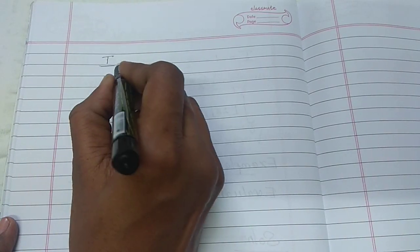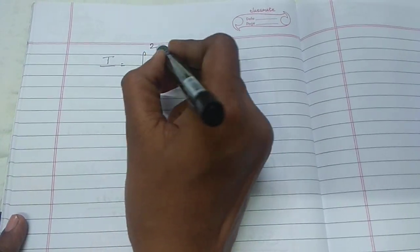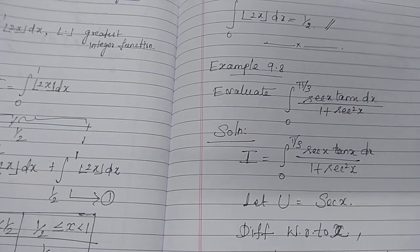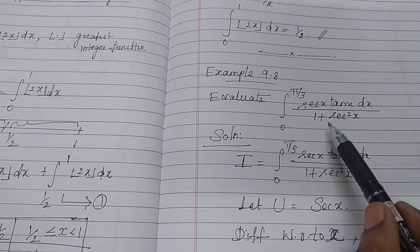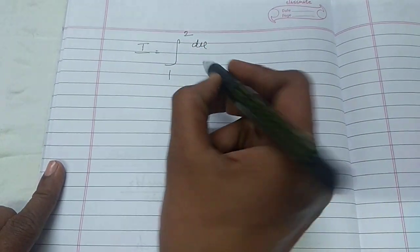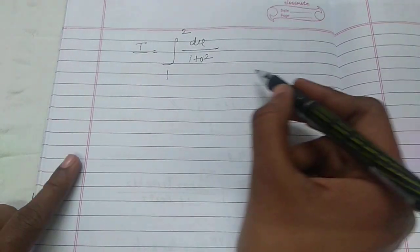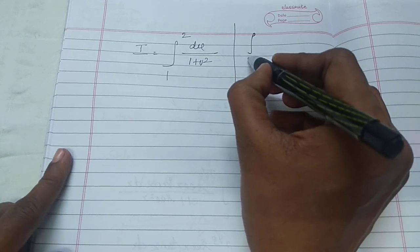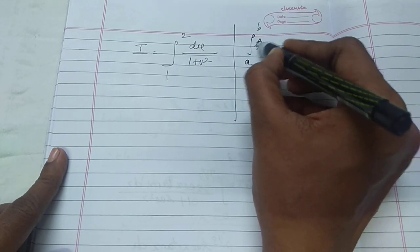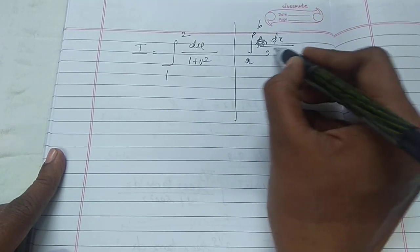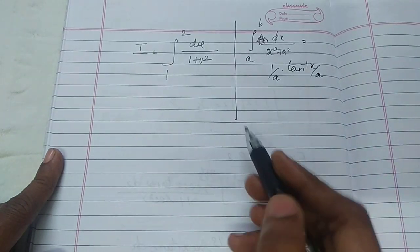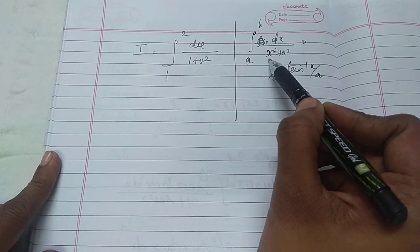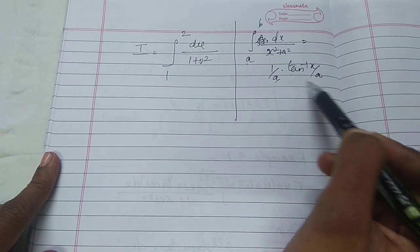Our integral I now becomes the integral from 1 to 2 of du divided by (1 + u²). Recall the integral formula: the integral of dx/(x² + a²) equals (1/a) tan⁻¹(x/a). Apply this formula here with a equal to 1.